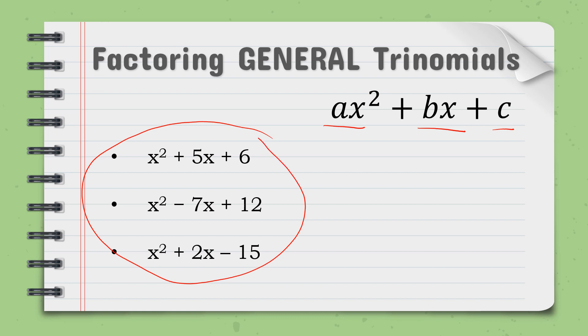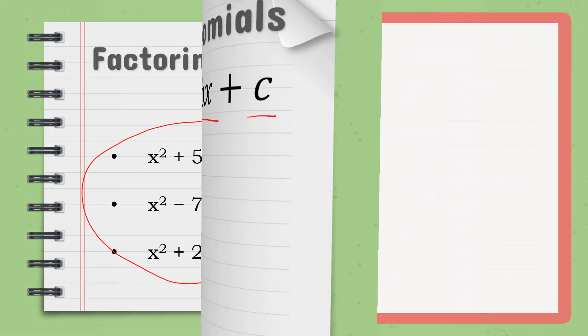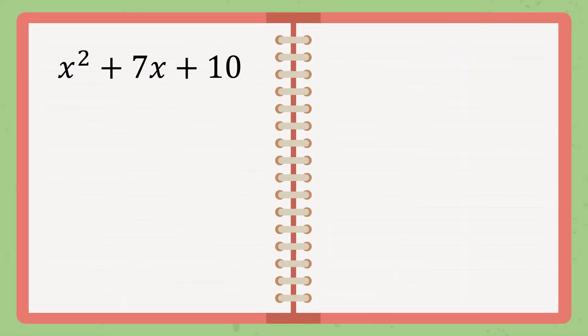So let us solve general trinomials. Okay, X squared plus 7X plus 10, it is not a perfect square. That's why we will use another technique and that is called the product and the sum or the PS technique.